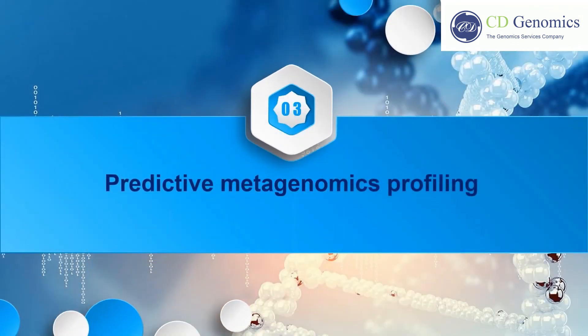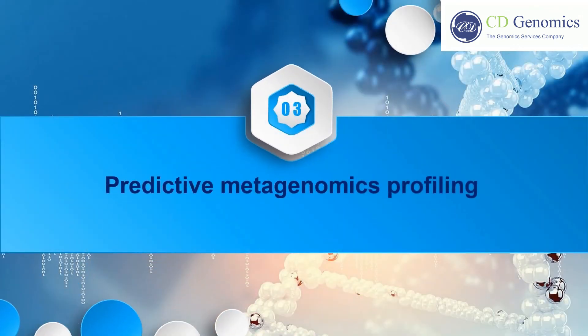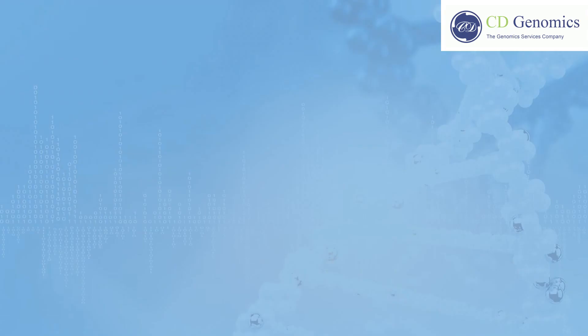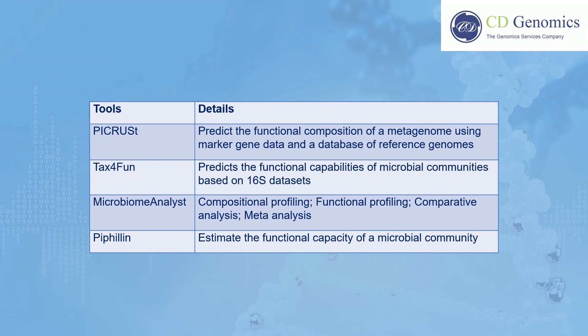An OTU abundance table can be further used to predict metabolic functions. Predictive metagenomics profiling is the process of understanding the role of the microbiome on host metabolism and disease. Powerful tools for predictive metagenomics profiling include PICRUSt, Tax4Fun, MicrobiomeAnalyst, and PCoA. In addition to functional profiling, MicrobiomeAnalyst can also be used for compositional profiling, comparative analysis, and meta-analysis.